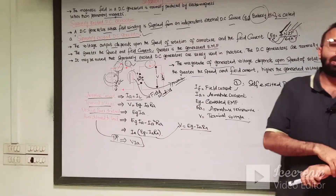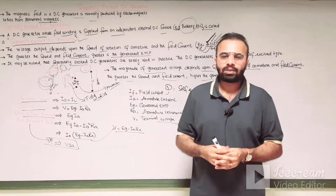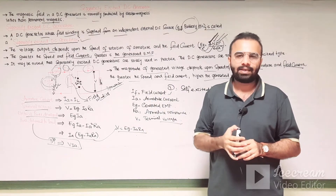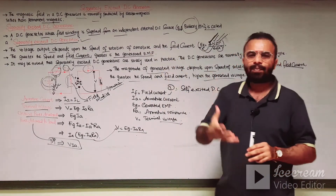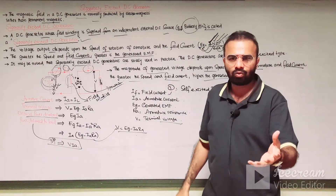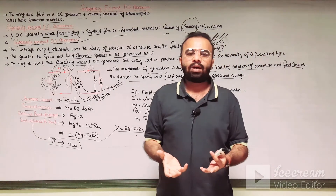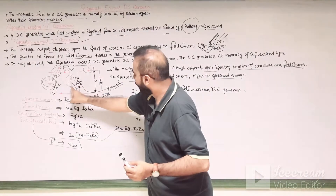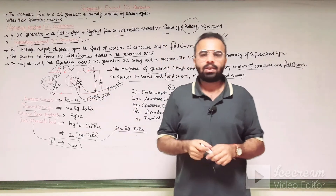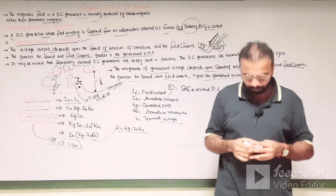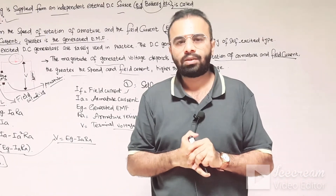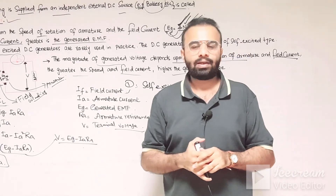This was the whole lecture regarding the separately excited DC generator, in which we discussed the mathematical expressions and formulas related to it. A separately excited DC generator is one whose field winding is supplied from an independent DC source, such as a battery. The field winding is excited from the separate DC source and the load is connected across the armature terminals. I hope you enjoyed today's lecture. Please subscribe to my YouTube channel for more informative videos related to electrical engineering. Thank you.